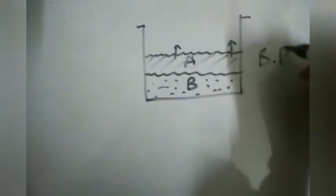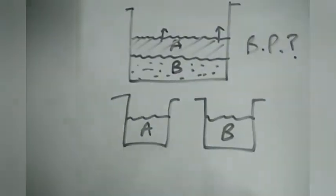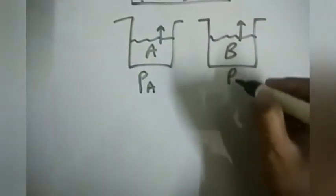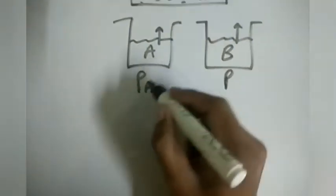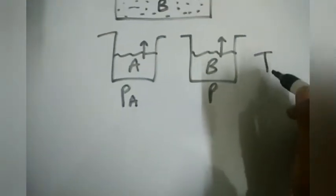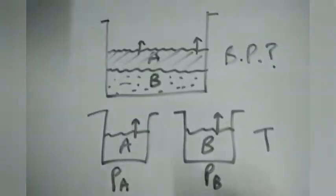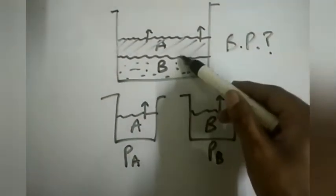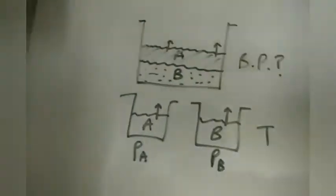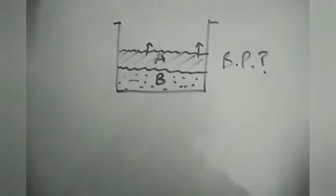Let's see how it will boil and what the boiling point will be. Say we have two different beakers with A and B — these are immiscible. When they are pure, they exert vapor pressures Pa and Pb at a particular temperature. So what will happen to the total pressure when we mix them, since both are immiscible?